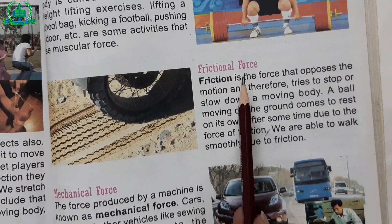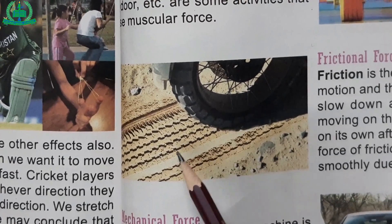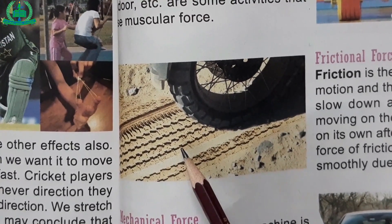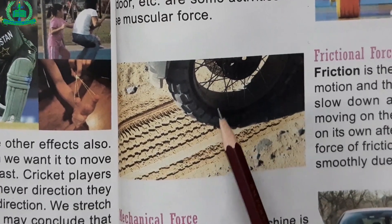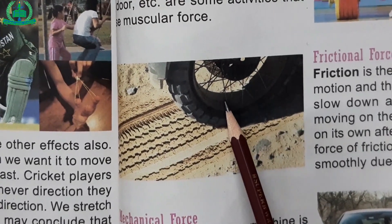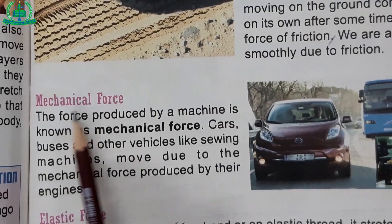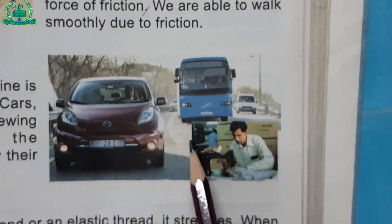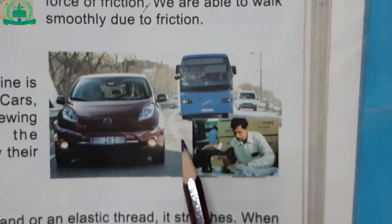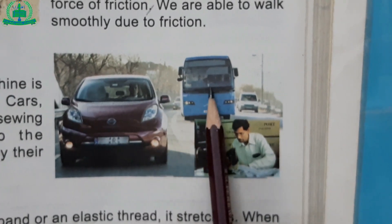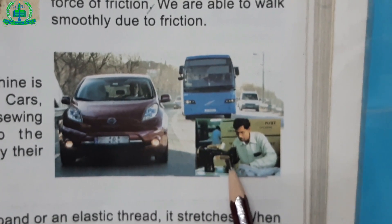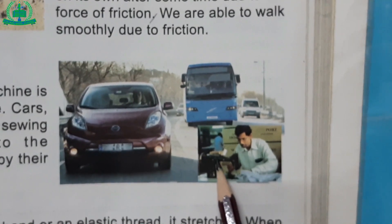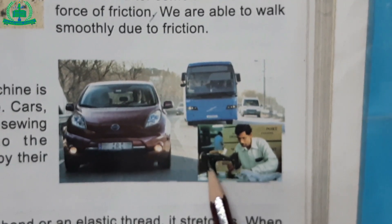Frictional force: friction is the force that opposes the motion and therefore tries to stop or slow down a moving body. Mechanical force: the force produced by a machine is known as mechanical force. Cars, buses and other vehicles like sewing machines move due to the mechanical force produced by their engines.